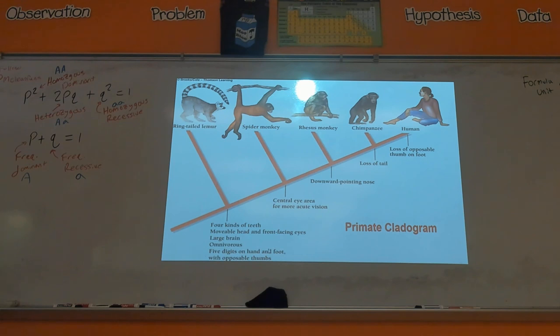So here's just another example, this would be the primate cladogram. So they could ask you what traits does the spider monkey have? Yeah, it would have all of these things on there. Which traits does it not have? It would not have the downward pointing nose, loss of tail, or the loss of a poseable thumb. Again, next class I'll give you some practice problems on this, but that's really it. Nothing too crazy.